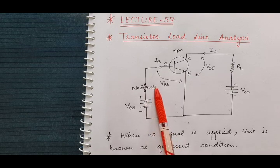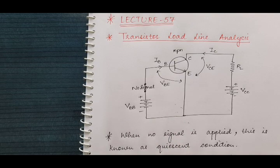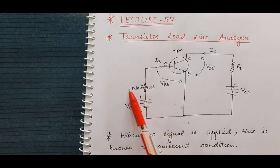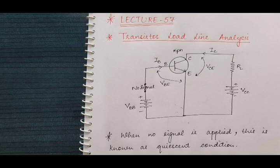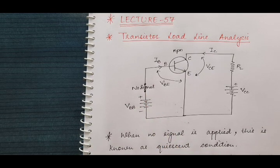Here we haven't applied any input signal for amplification yet. So when we don't apply any input signal for amplification purposes between these two terminals, at that time this is known as the quiescent condition. When no signal is applied between these terminals for amplification, then it is known as the quiescent condition of the transistor.